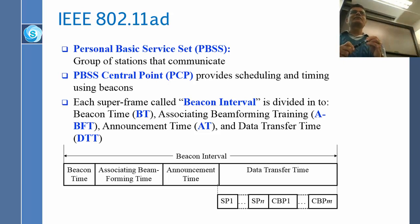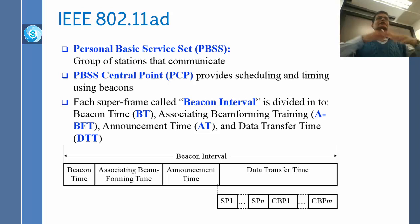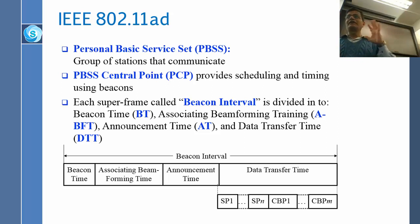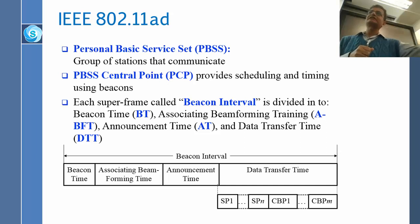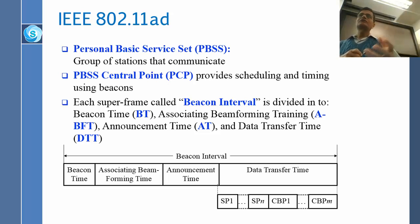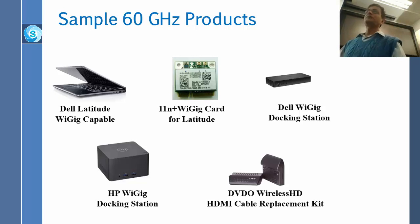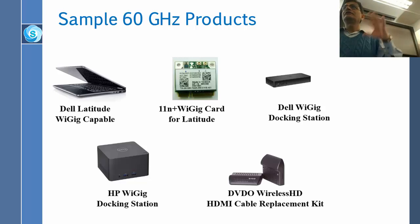The PCP is not a device that you buy separately — one of the stations which is the most powerful will become the PCP. For example, if you have a computer and several other devices, the computer becomes the PCP. If you have a television and everything else, the television becomes the PCP. The idea is that you do not have to buy a separate device. A station could have both functions — it is most likely a station as well as a PCP.